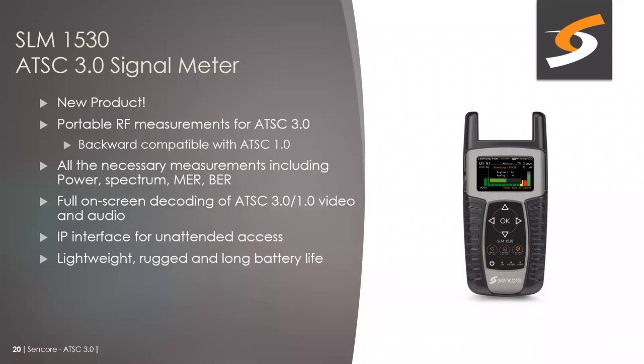The SLM 1530 has all the necessary measurements you'd expect in a signal level meter: power, spectrum, MER, BER, and really one of the most interesting features — full on-screen color video and audio decoding of ATSC 3.0 services. The screen is only a couple of inches but you can get a very good idea that the service is working and video and audio are there. As ATSC 3.0 transmissions start rolling out across the country, a handheld meter like this would certainly be a useful tool. Look for more information and press releases soon.